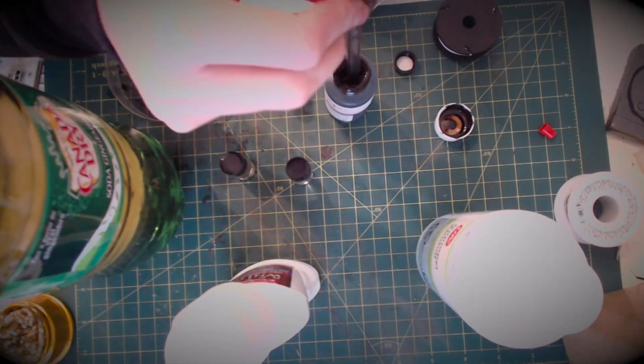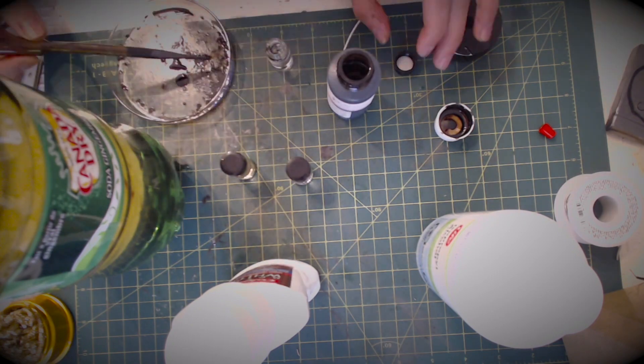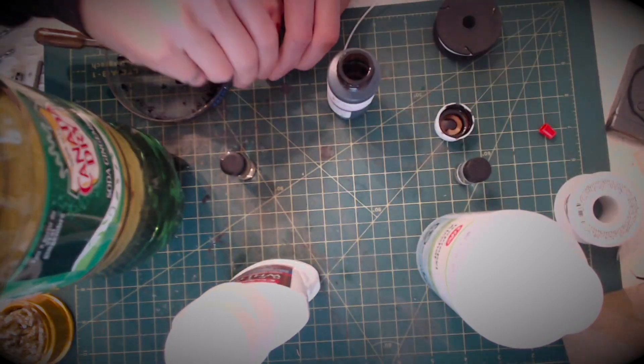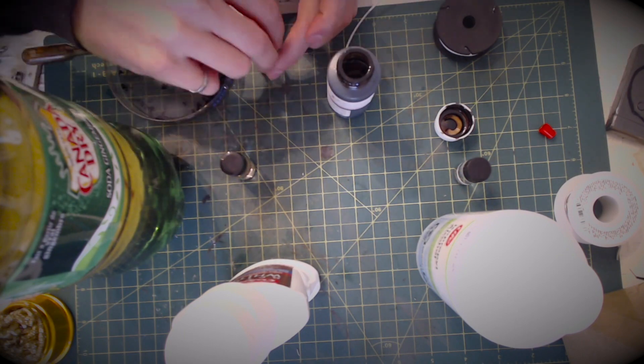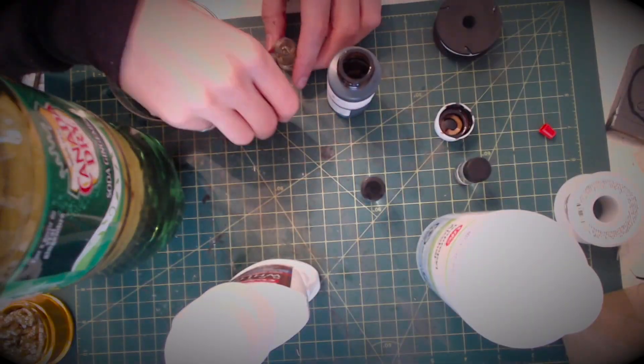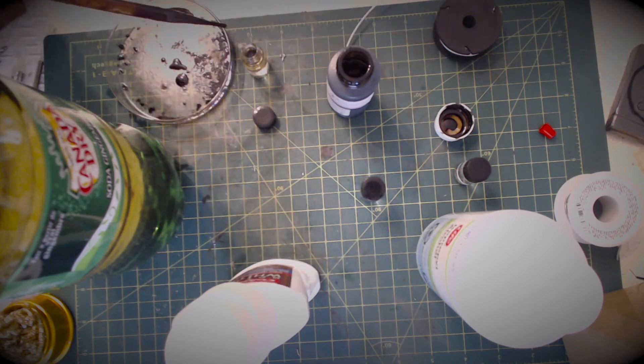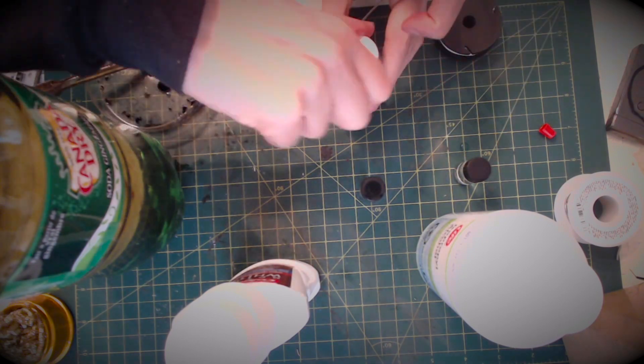Add only three to four drops of ferrofluid to each container. Adding too much ruins the effect. Also, I'd recommend filling the jars as much as possible, straight to the brim, so that way when you're turning them on their side, you don't see a big air bubble that makes it hard to see the ferrofluid.